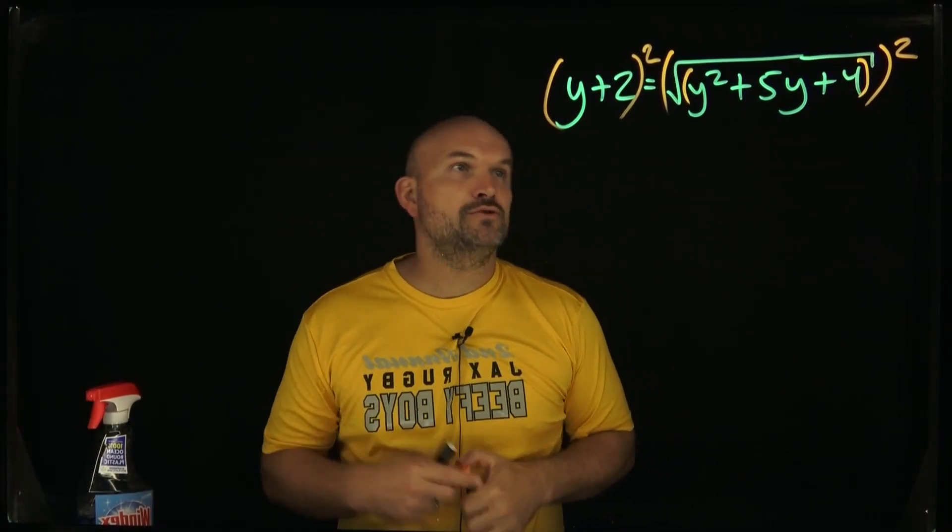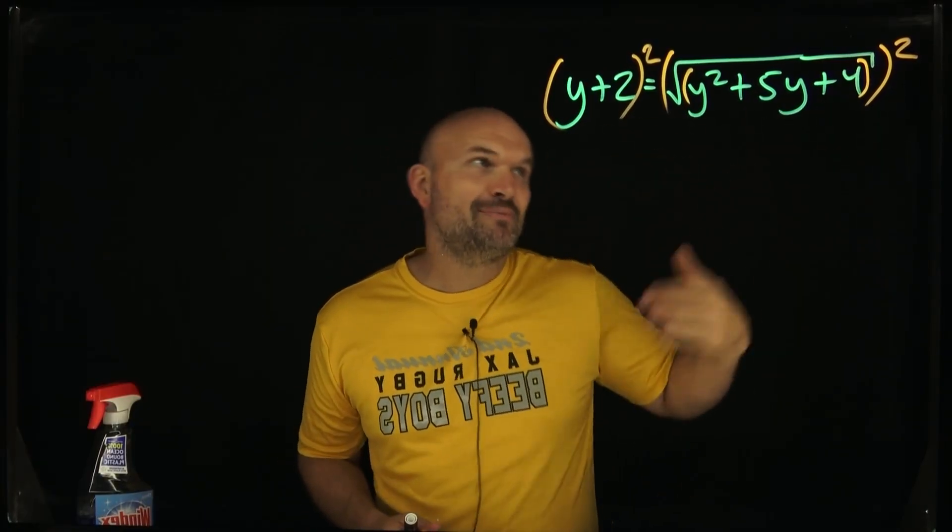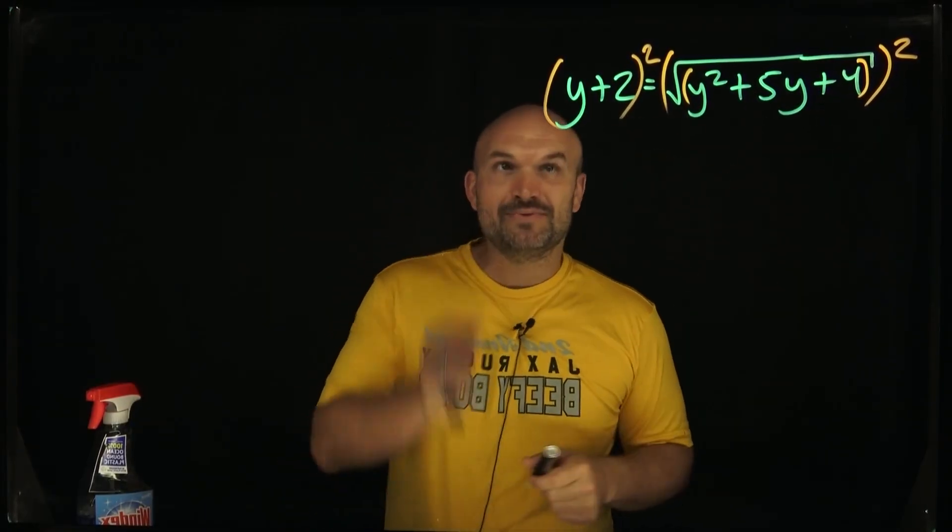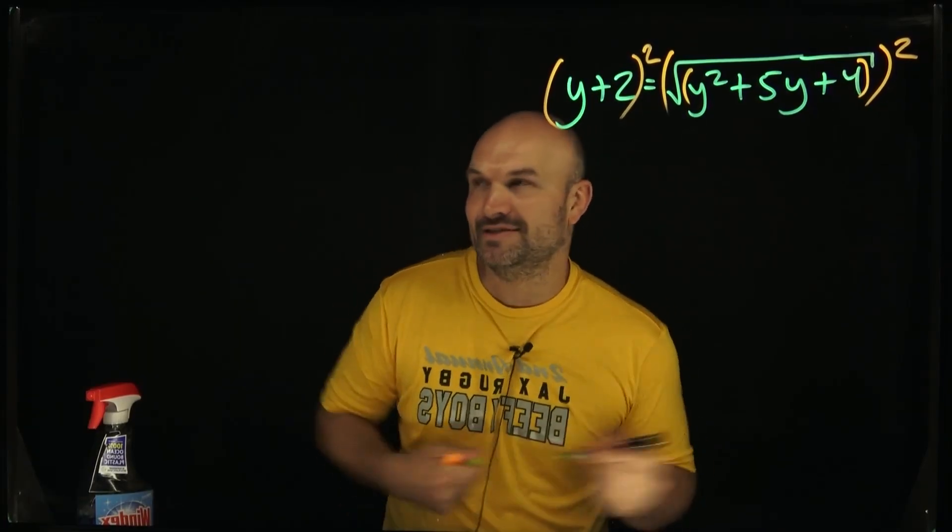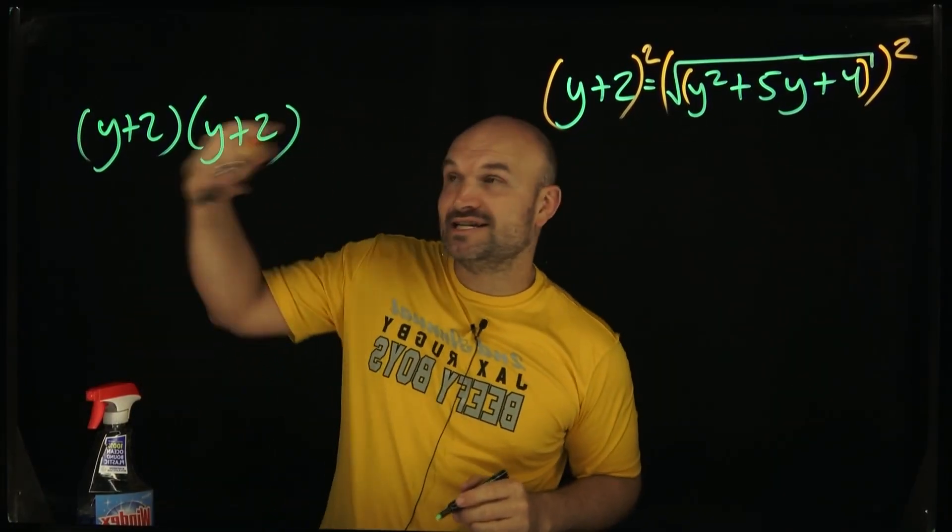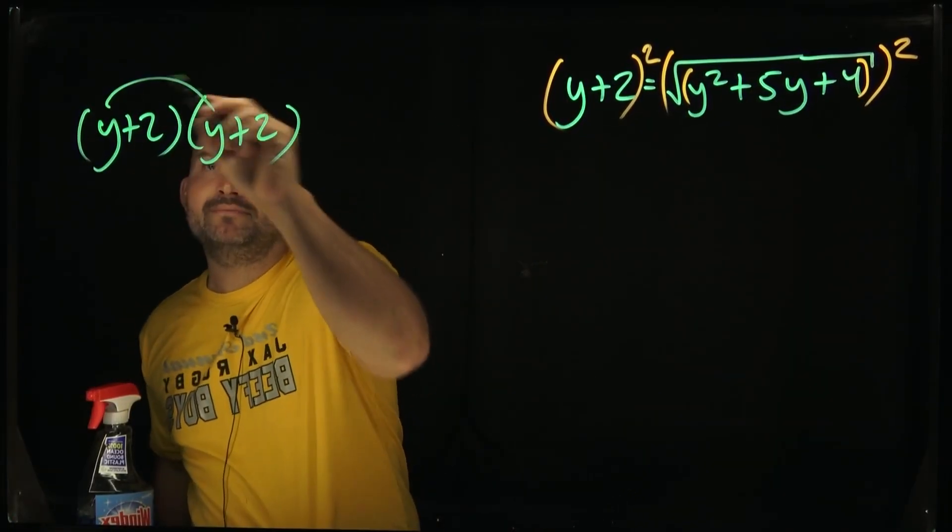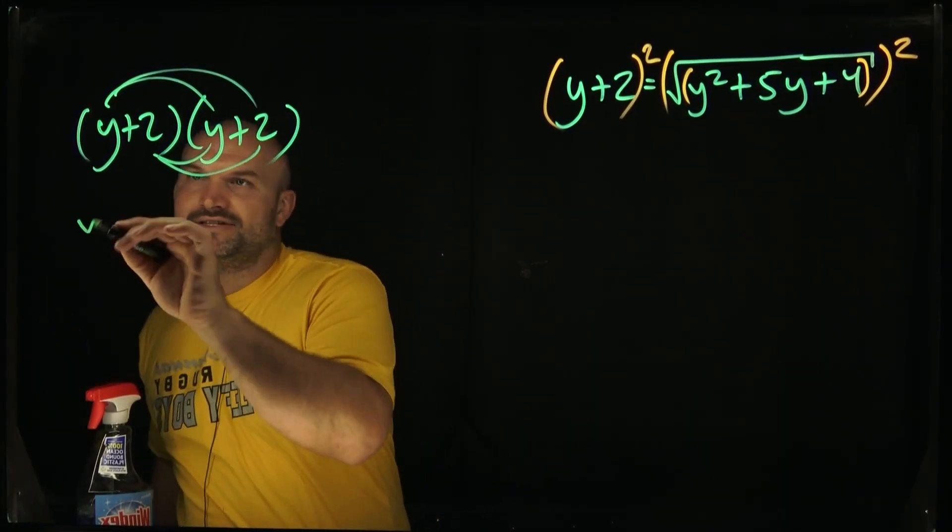Now you can see that I have (y+2) quantity squared equals the square root of y squared plus 5y plus 4 quantity squared. Just real quick, make sure you square the (y+2) squared, don't make the mistake of squaring the y and the 2. (y+2) squared is just (y+2) times (y+2), so we've got to make sure we are applying distributive property or FOIL or whatever you want to do to get the final answer.